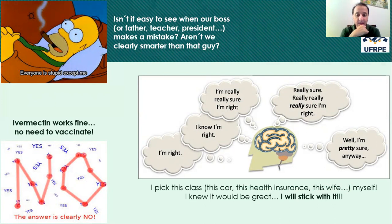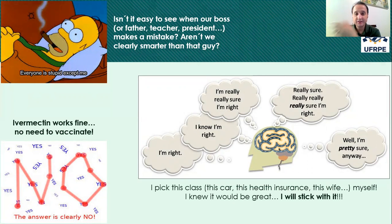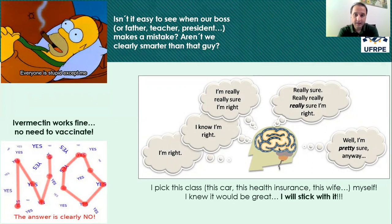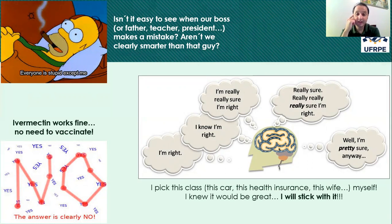Whenever we make a choice — picking this class, choosing a car, picking a health insurance — we tend to stick with it. We say that was the right choice, I love the option I made. And sometimes we take too long to realize our choices need revision. Every one of us is human and we make mistakes. But as humans, we also tend to insist on many mistakes. This is something kind of programmed in our brain, and we have to pay attention to that — otherwise we may keep making mistakes for a long, long time.